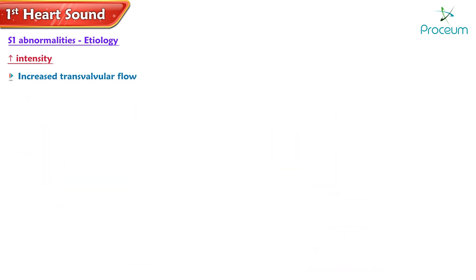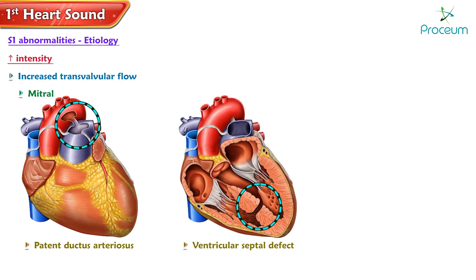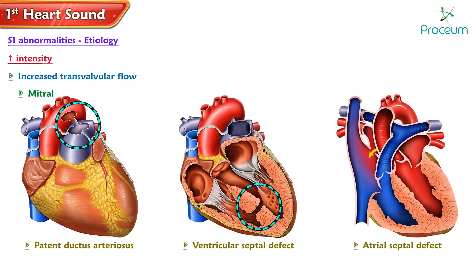Increased transvalvular flow can also intensify S1. Mitral valve abnormalities associated with patent ductus arteriosus, ventricular septal defect, and atrial septal defect can result in higher blood flow across the mitral valve, leading to an intensified S1. Similarly, certain conditions affecting the tricuspid valve can increase transvalvular flow and consequently intensify S1.